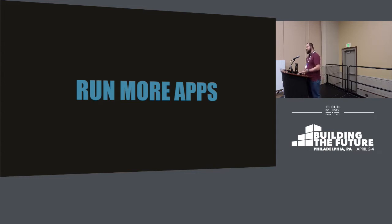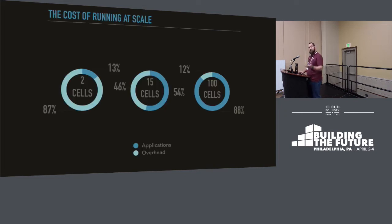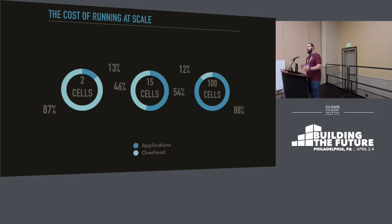So what does overhead look like in Cloud Foundry? If you're running a Foundry with only two cells — assuming the cells are four CPUs, 16 gigs of RAM, the usual standard — 87% is that overhead. The real break-even point is about 15 cells. Once you're at about 15 cells, your actual app resources are more than the platform overhead itself, which means you're really starting to take advantage of it. And then once you hit 100 cells, you're at almost 90% efficiency, which is really, really good.